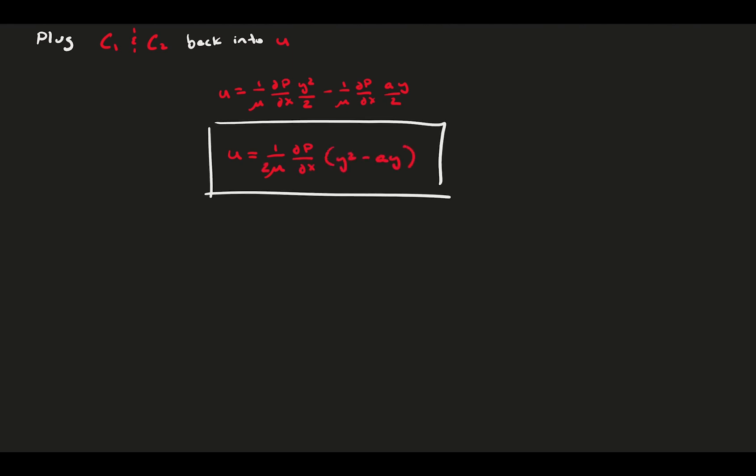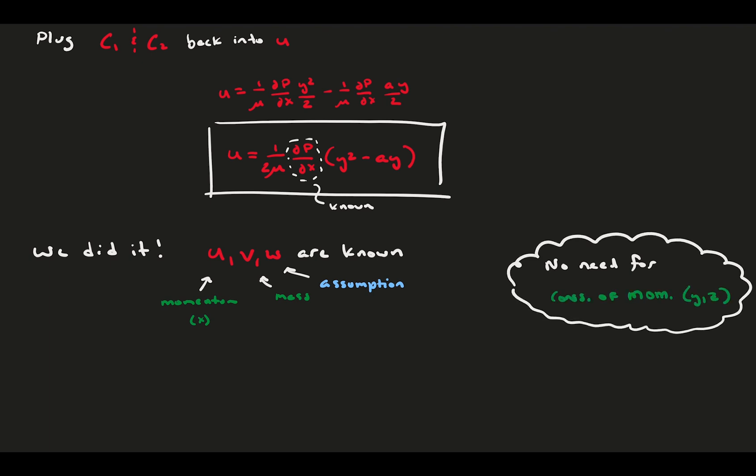And we did it. We now know the three velocity components, u, v, and w, as known functions. We got u from the conservation of momentum just now, v from the conservation of mass, and w was an assumption. For the velocity field, there's no reason to continue on to the conservation of momentum in the y and z directions. The only thing those equations would tell us is that the pressure is not a function of y or z, and therefore is only a function of x. Presumably, this could easily be found by knowing the pressure at each end of your channel, which would give you the pressure gradient. This type of flow profile is parabolic, with a maximum velocity in the center and zero velocity at the walls.